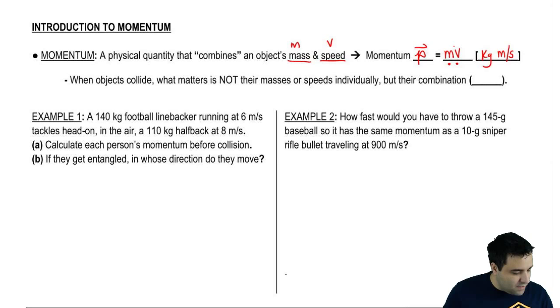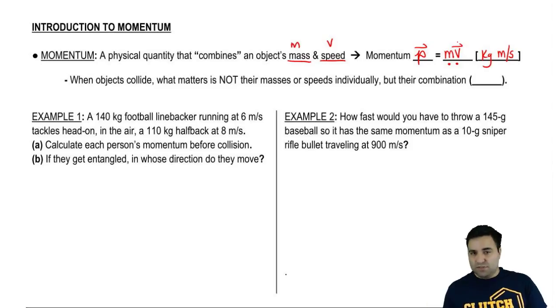Momentum is a vector and velocity is a vector as well. We'll talk about that a little bit more later. So momentum is really important in collisions, as we'll see throughout this chapter. And the idea is that when objects collide, what's going to matter is not their mass or their speeds, but a combination of those.